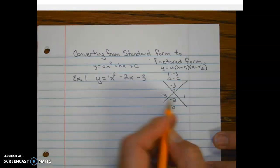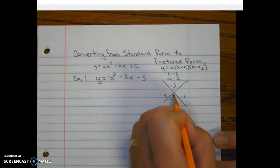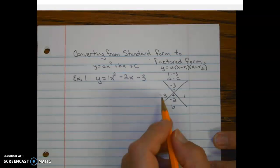Negative 3 plus 1 is negative 2. And so they have to add to give us the bottom number. So we found our two numbers.